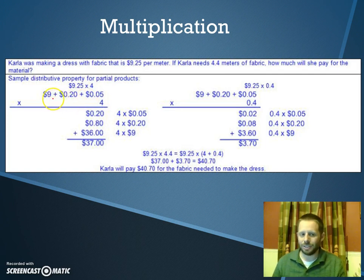$9.25 times 4, you may be able to do that without doing the partial products, but just in case, you can still use partial products to make the math even simpler. We're breaking the $9.25 into $9, into 20 cents, and into 5 cents. So we're breaking it down into its individual place values, then doing 4 times each part. 4 times 5 cents is 20 cents, 4 times 20 cents is 80 cents, 4 times $9 is $36. We add those together, we get $37 for the 4 meters of material.